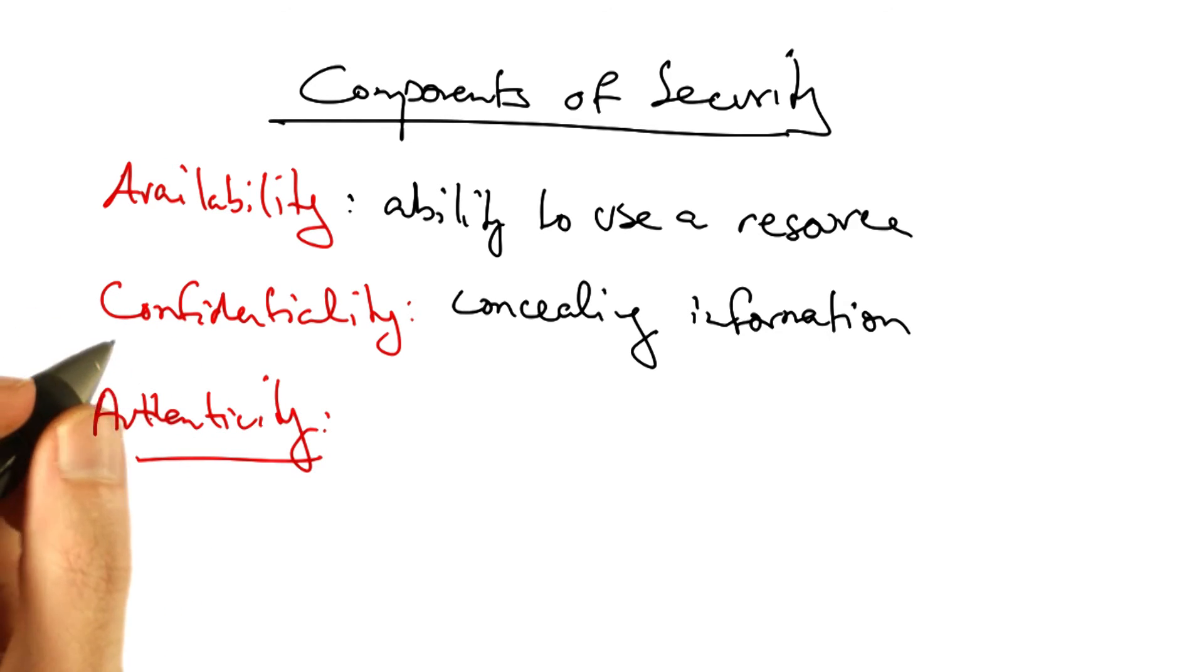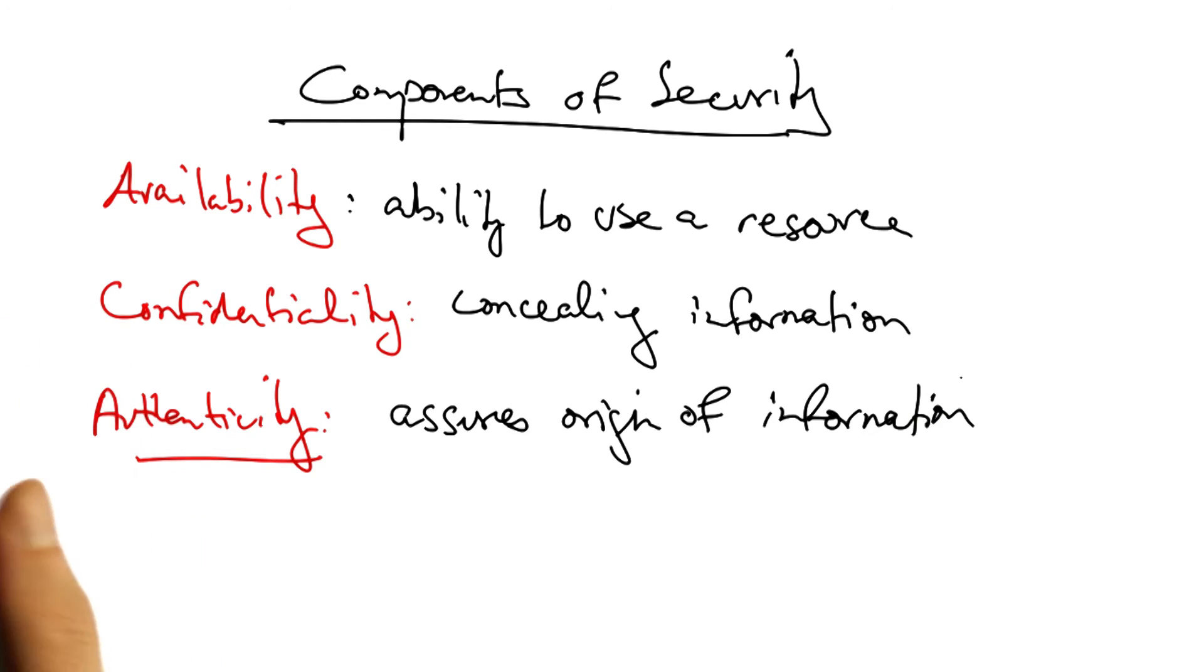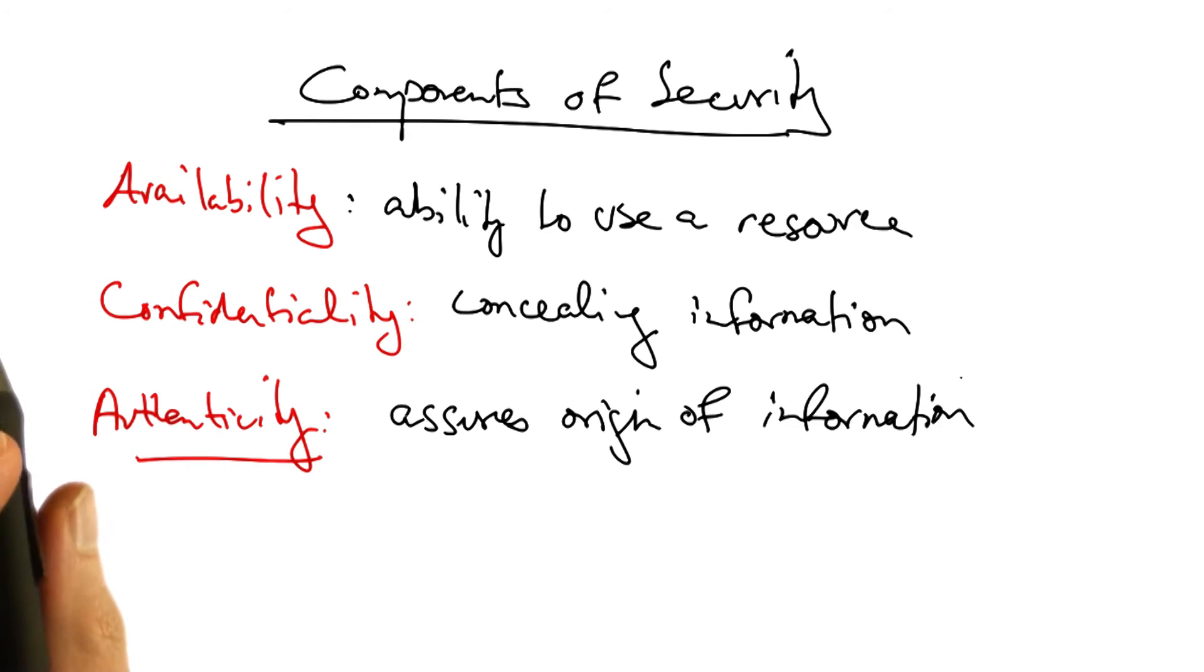Another component of security is authenticity. Authenticity assures the identity of the origin of a piece of information. For example, if you're reading a particular news article, you may really want to know that that article came from the New York Times website as opposed to from some other place on the internet.